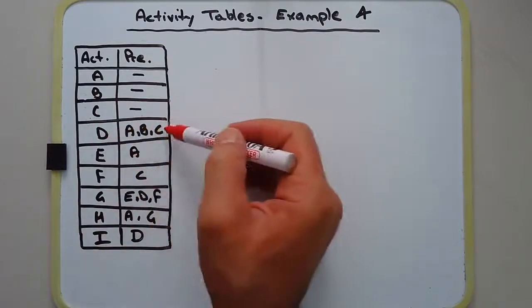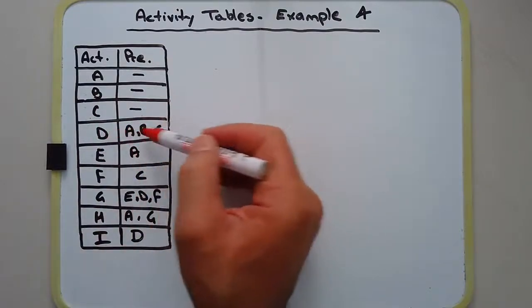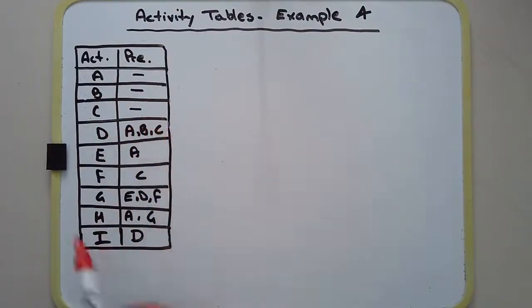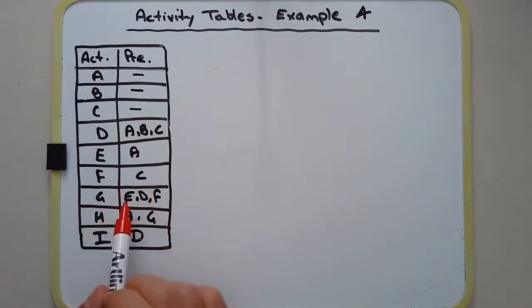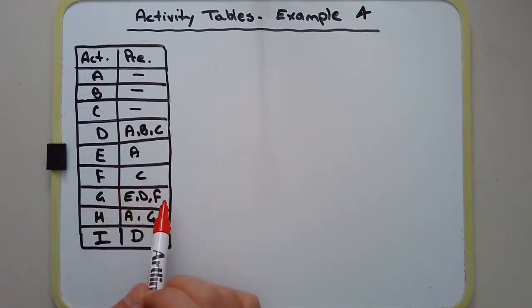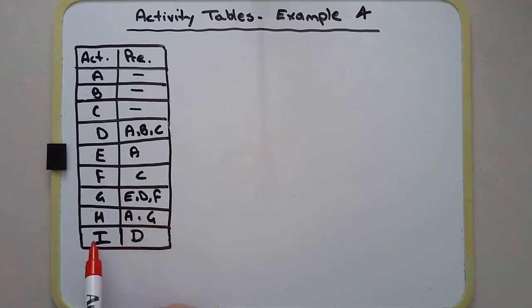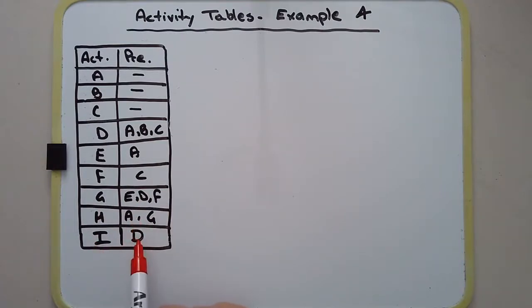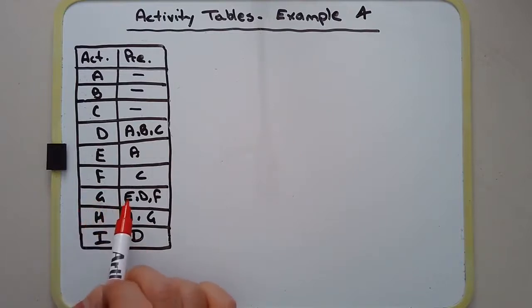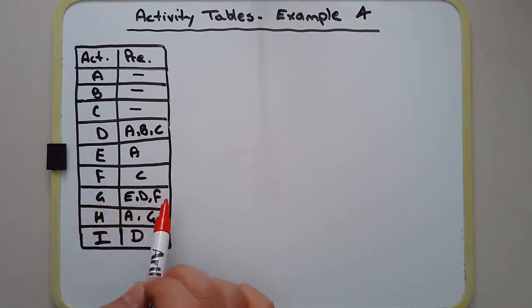Activity D has three predecessors: A, B, and C. Activity G has predecessors E, D, and F. H has two predecessors. Notice also that I depends on D alone, whereby activity G depends on E, D, and F.